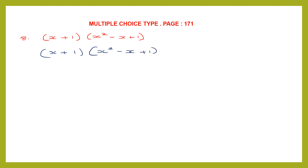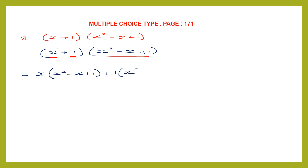We take the first term of the first binomial and multiply it with the whole trinomial. So x into the whole trinomial, that is x squared minus x plus 1. Then we take the second term of the binomial, that is 1, so plus 1 into x squared minus x plus 1, the whole trinomial.